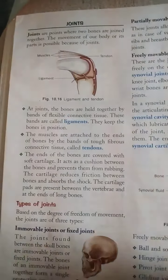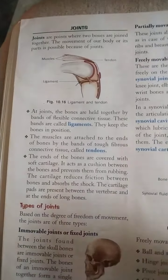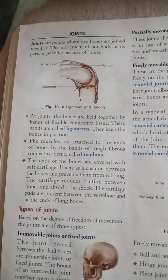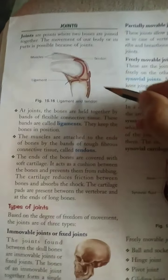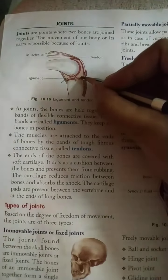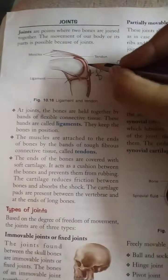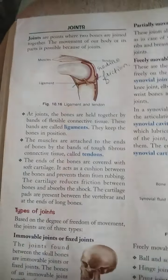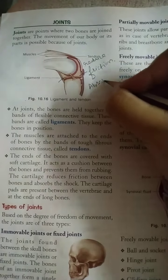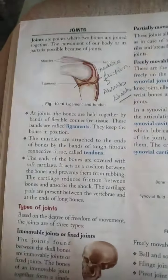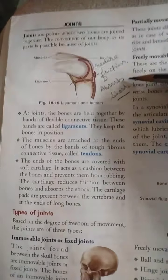Except for the ligament and tendon, there is a protective cushion-like covering present in between the two bones. This cartilage is present between the two bones and it helps to reduce friction and absorb shock. So the function of the cartilage present between the two joints is to reduce friction and to absorb shock.